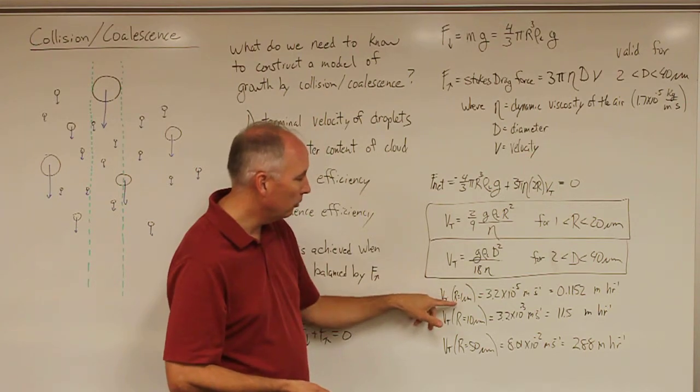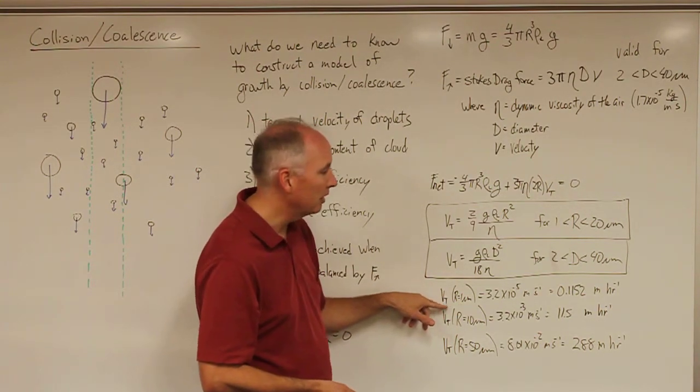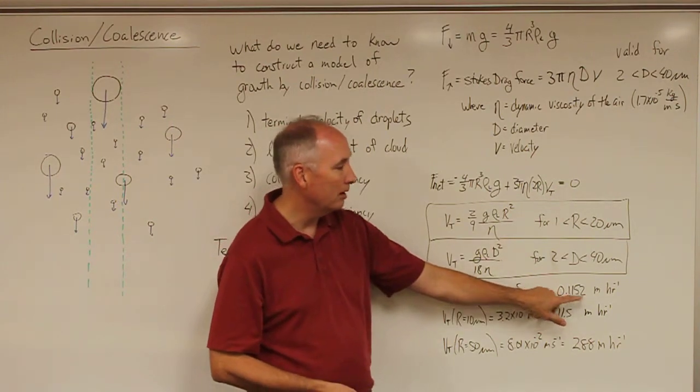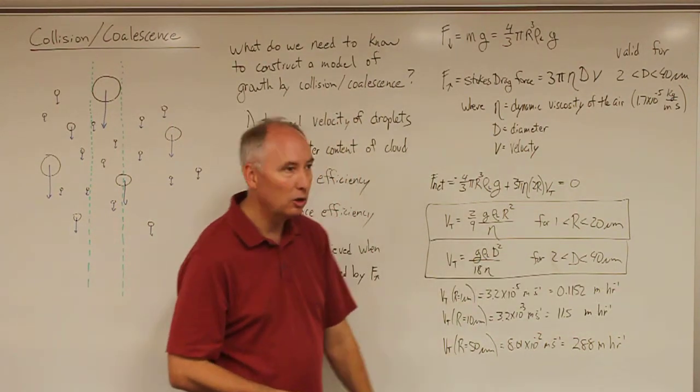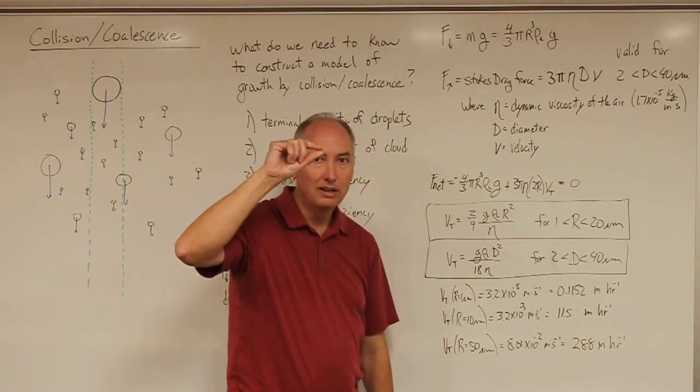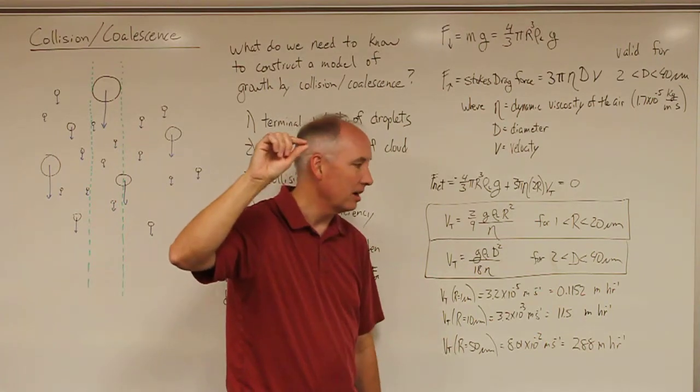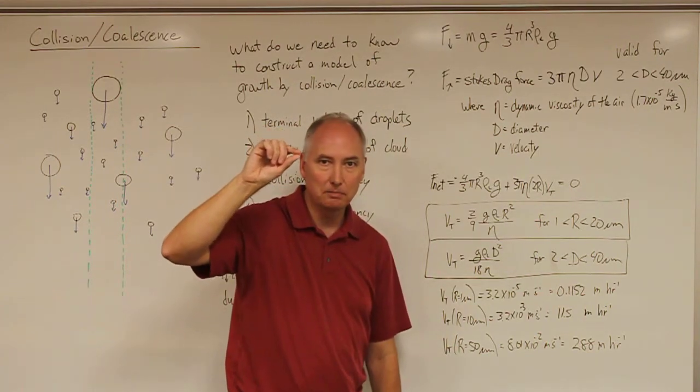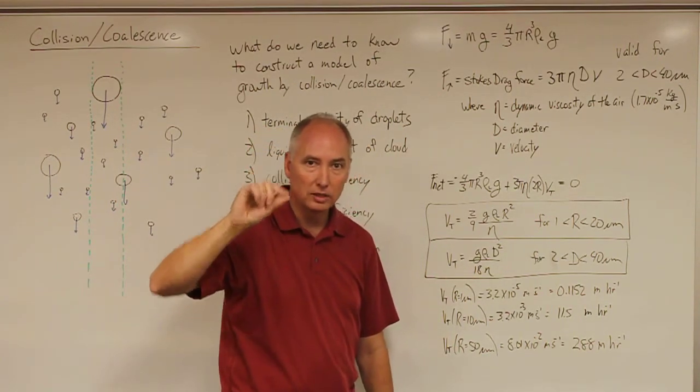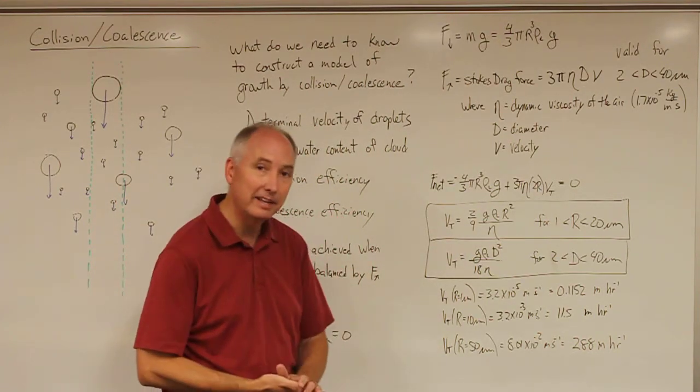if we plug in a radius of 1 micrometer, then we'll get a terminal velocity of about 0.1 meters per hour. So a 1 micrometer droplet in 1 hour by the terminal velocity would cause that to fall basically 1/10 of a meter. That's very small and that's why these droplets essentially stay suspended in the atmosphere.